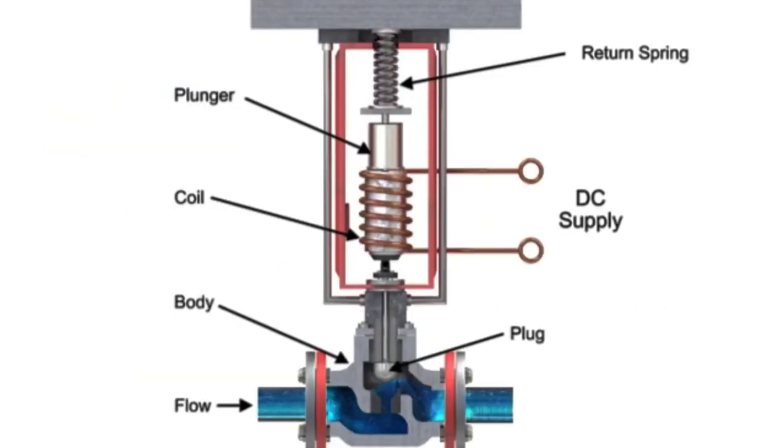For on-off control of the valve, a solenoid is used to actuate the valve to a fully closed or fully open position. Applying current to the coil generates a magnetic field that moves the plunger downward against the return spring.